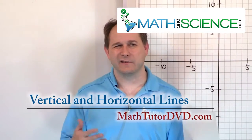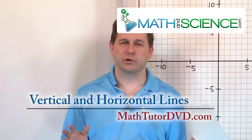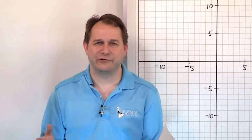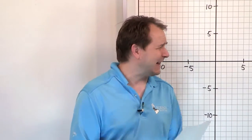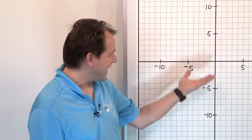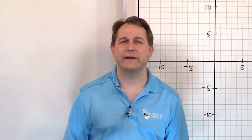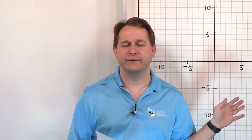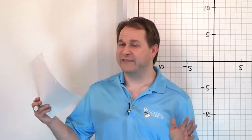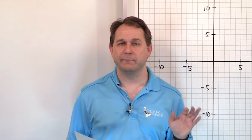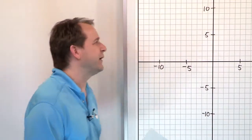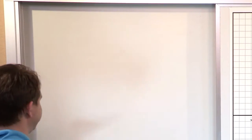In previous lessons I've hinted around a little bit about vertical and horizontal lines. We talked a little bit about the slope of those special lines. Here we're going to talk about their equations, and I want to put it in its own section because they look a little bit weird at first. I think for this lesson it's going to be more helpful to just sketch a little bit more cleanly on the board.